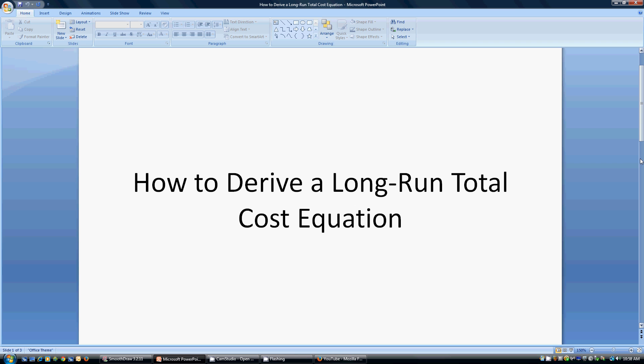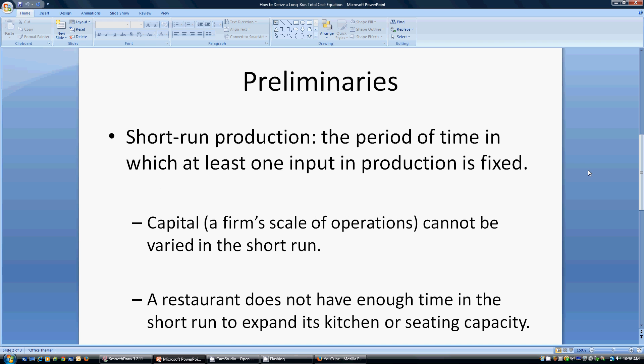First, some preliminaries. Let's distinguish between the short-run and long-run. Short-run production is the period of time in which at least one input in production is fixed. Usually we think of that fixed input as capital, or the firm's scale of operations. This cannot be varied in the short-run. There's simply not enough time.